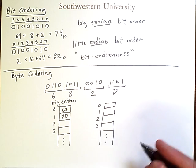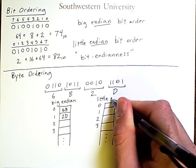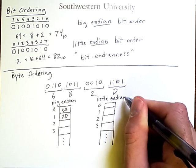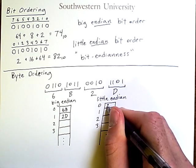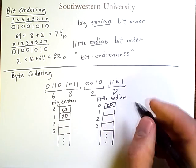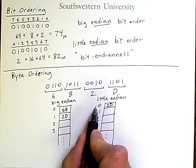Now in contrast, if I were doing little endian byte ordering, I would start with 2D, the lower order bits, in the lower number memory address.